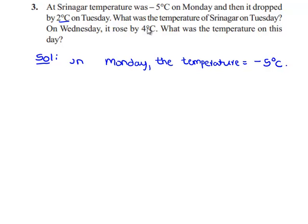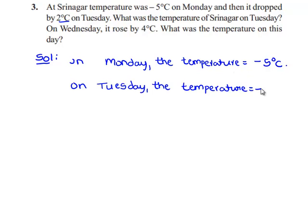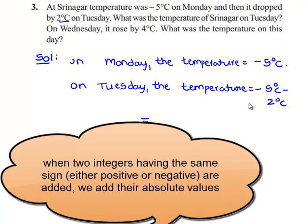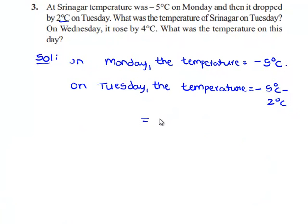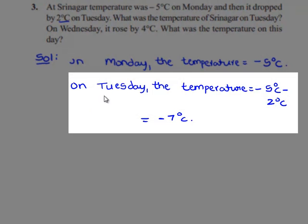We'll note it down. Minus 5 degrees Celsius minus 2 degrees Celsius becomes minus 7 degrees Celsius. Therefore, the temperature of Srinagar on Tuesday is minus 7 degrees Celsius.